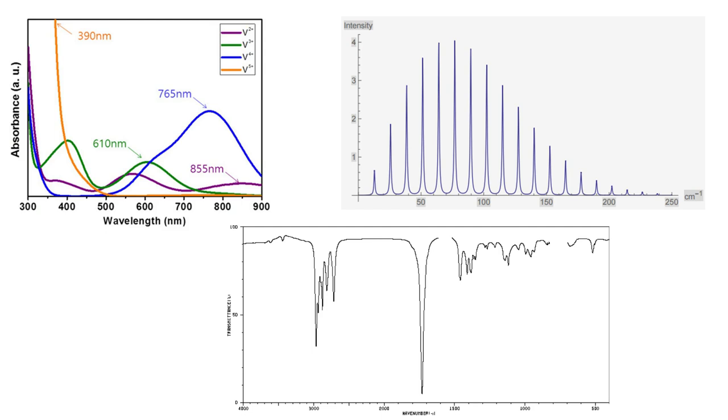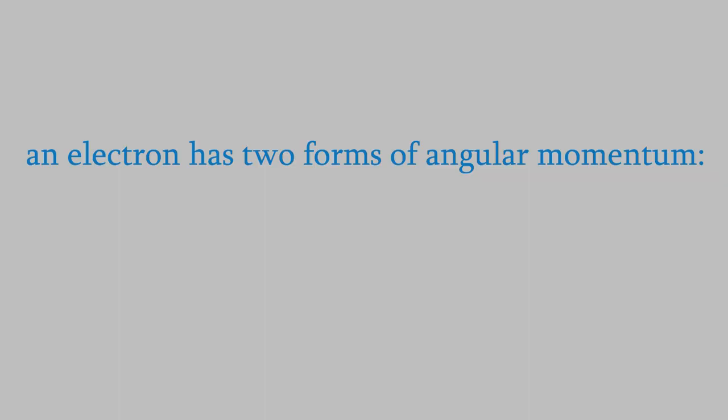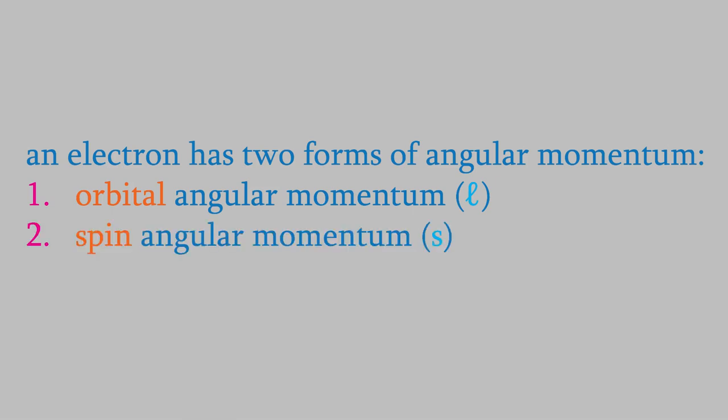For most types of spectroscopy we'll talk about, the photons are interacting with the electrons rather than the nuclei. That means it's the properties of the electrons that we need to worry about. As it turns out, the angular momentum of the electron is particularly important in spectroscopy. So here's an important thing to remember. Electrons have different types of angular momentum. There's orbital angular momentum, which we give the symbol of a script letter L, and there's spin angular momentum, which has the symbol S.